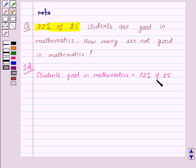That means total students are 25 and out of 25 students, 72% are good in mathematics.